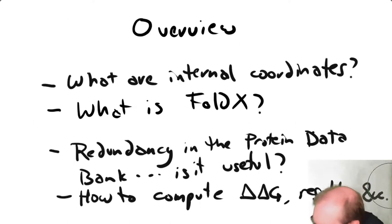We're going to start by talking a little bit about my code, Macromolecule Builder or MMB. It runs in internal coordinates and we're going to talk about what that buys us. Then I'm going to talk about FoldX, a protein stability force field which is also useful for protein-protein interactions. I'm going to talk about redundancy in the protein data bank, what I mean by this and how it could be useful to us. And then we'll show some results of computing delta-delta-G.